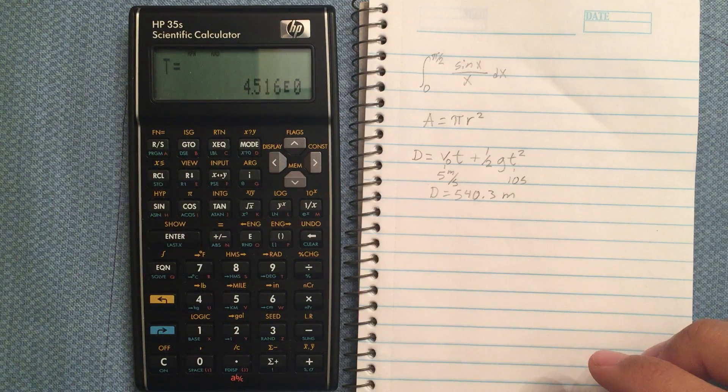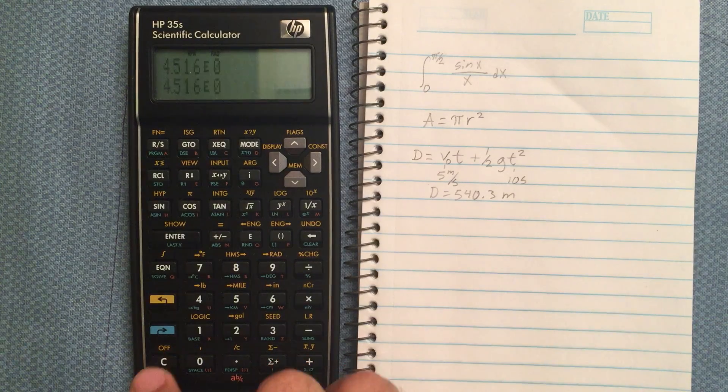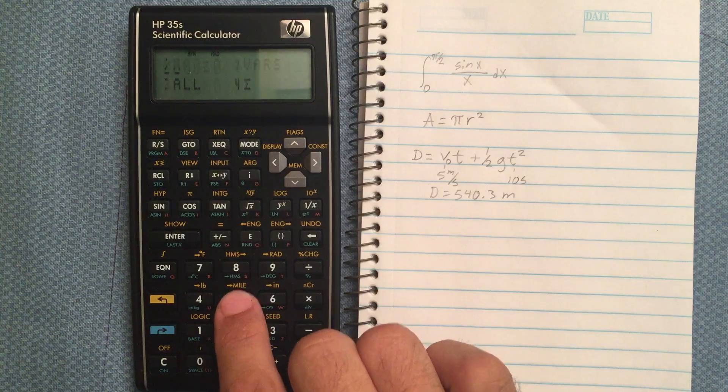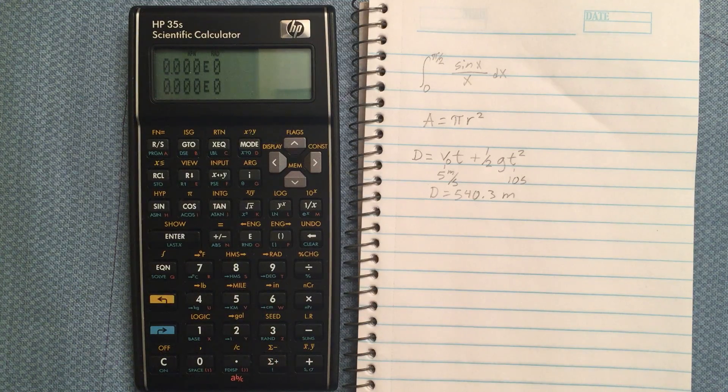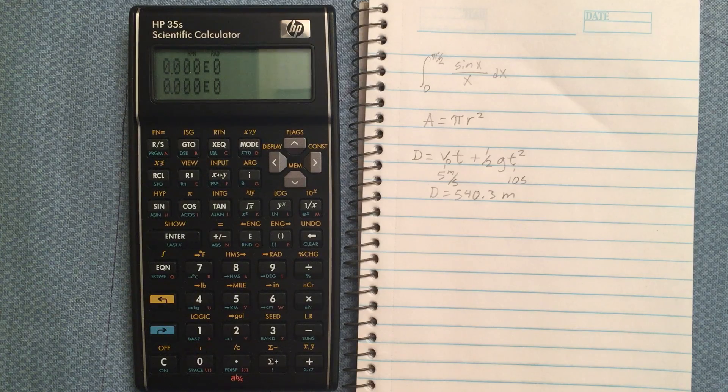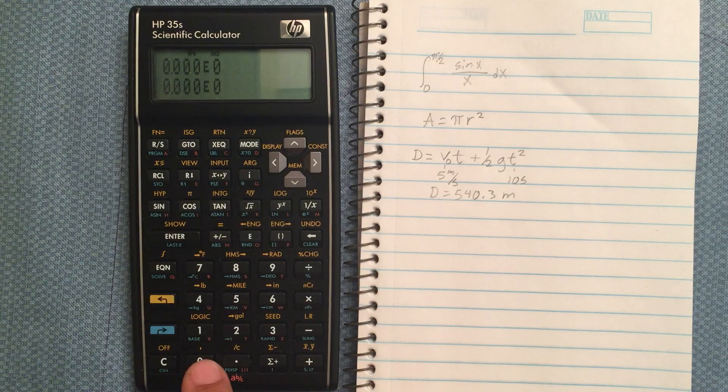Here's a quick video about changing bases. I'm going to clear my stack here. So the calculator assumes that you enter everything in base 10, unless you specify otherwise.